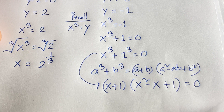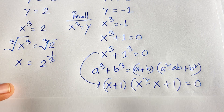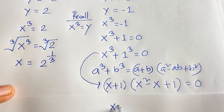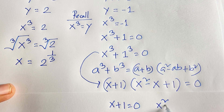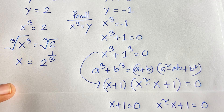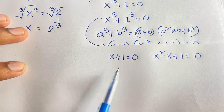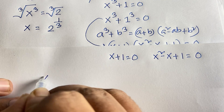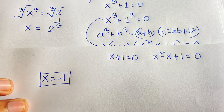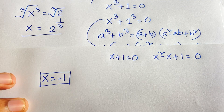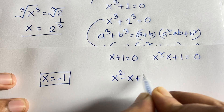So we find two more cases. First case: x plus 1 equals 0, giving x is equal to negative 1. The other case: x squared minus x plus 1 is equal to 0, which is a quadratic equation.